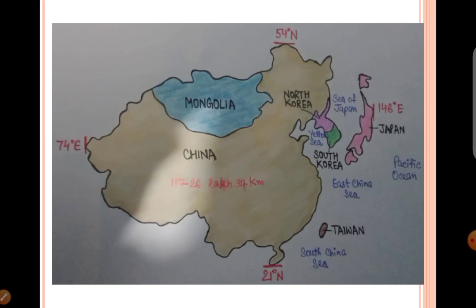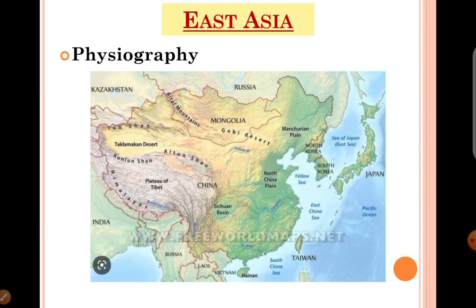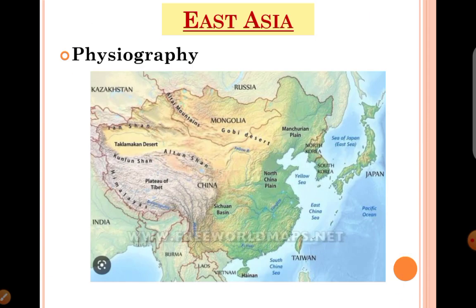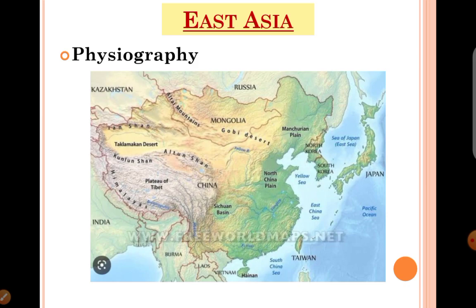So this is the latitude and longitudinal extension. We will be discussing the Physiographic Division of East Asia in this video. Physiographically, East Asia region is categorized in three parts: first, mountain ranges cum plateaus of the west; second, river valley plains; and third, island arcs.